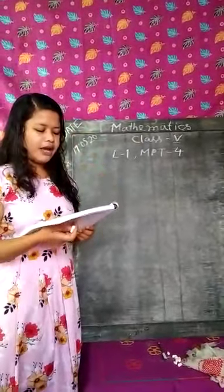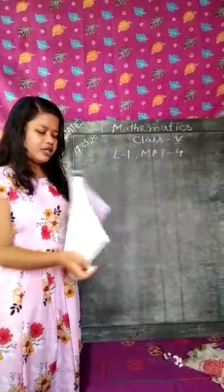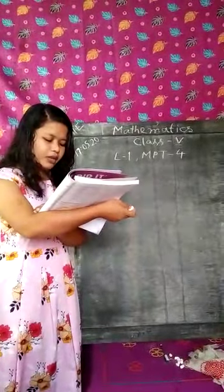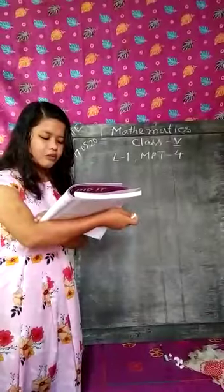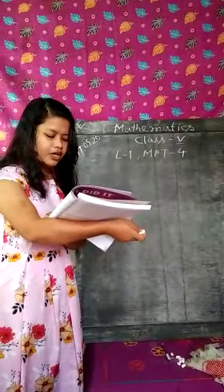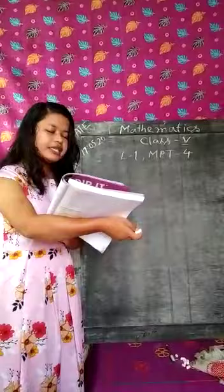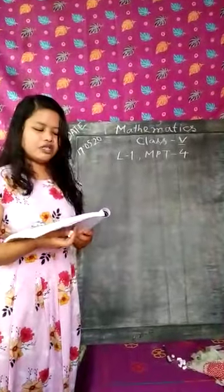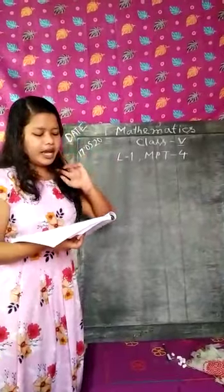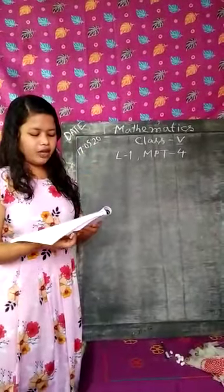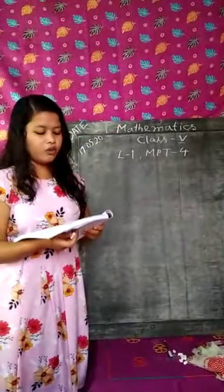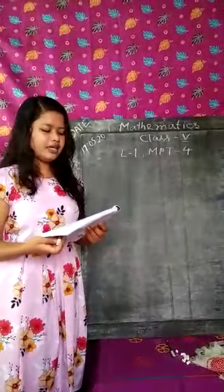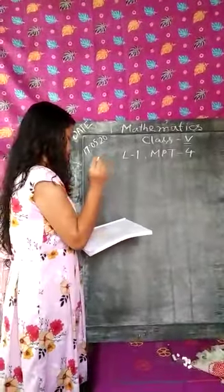We will start My Practice Time 4 and do question number 4, which is on page number 9. The task is to form numbers by repeating the given digits. In question number 1 we already did making the largest and smallest 7 or 8 digit numbers without repeating the digits, but here we can repeat the digits. Question number A is: smallest 7 digit number. There are 5 digits given, and with these 5 digits we should make the smallest 7 digit number.